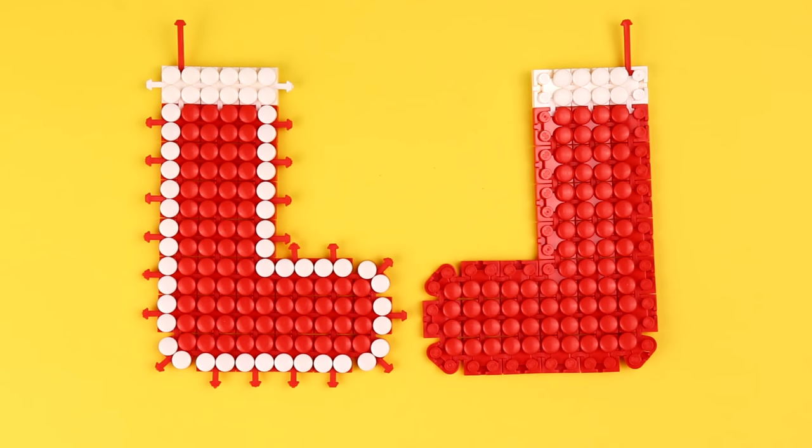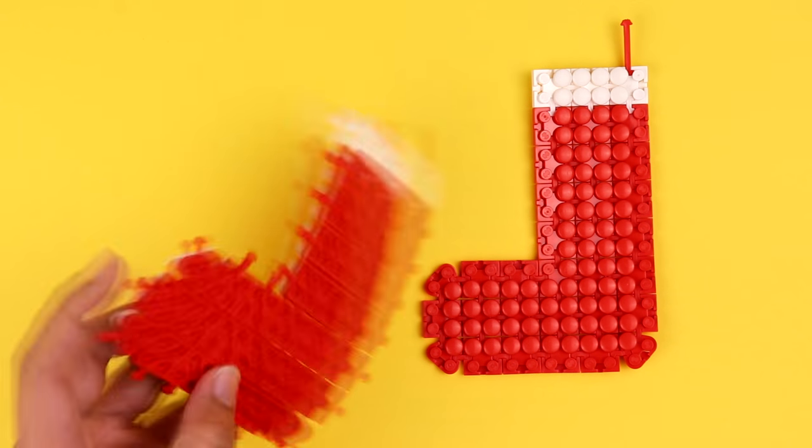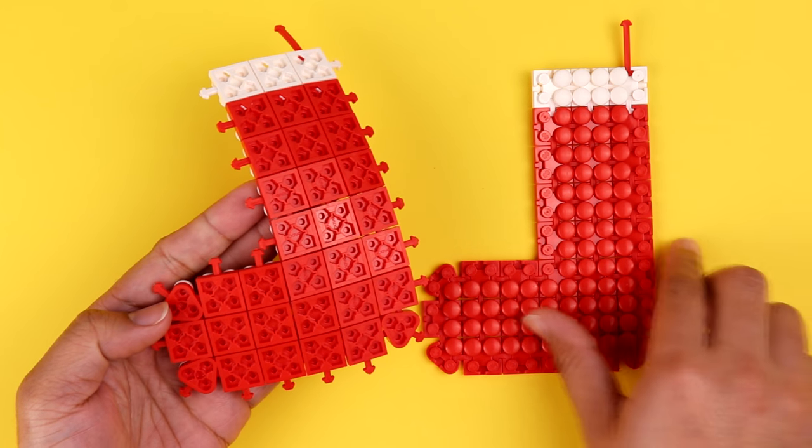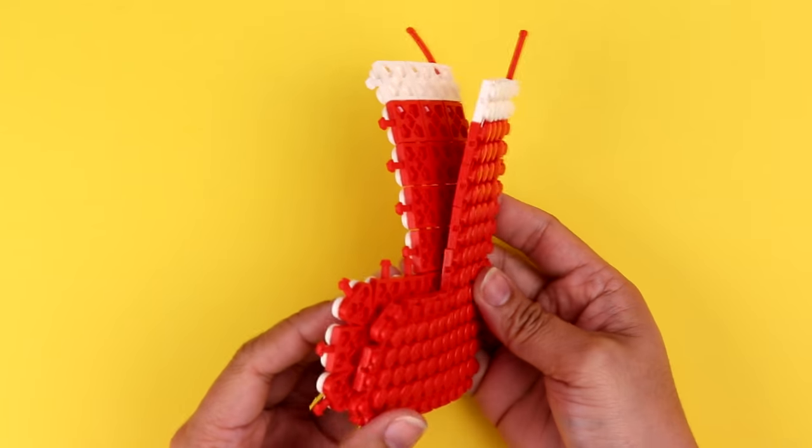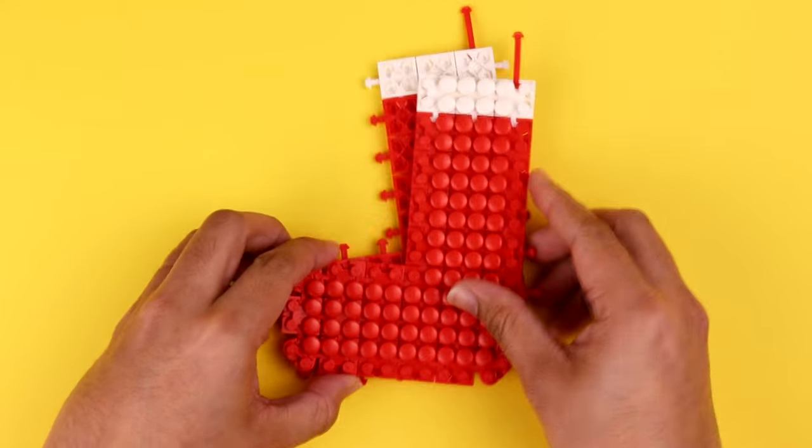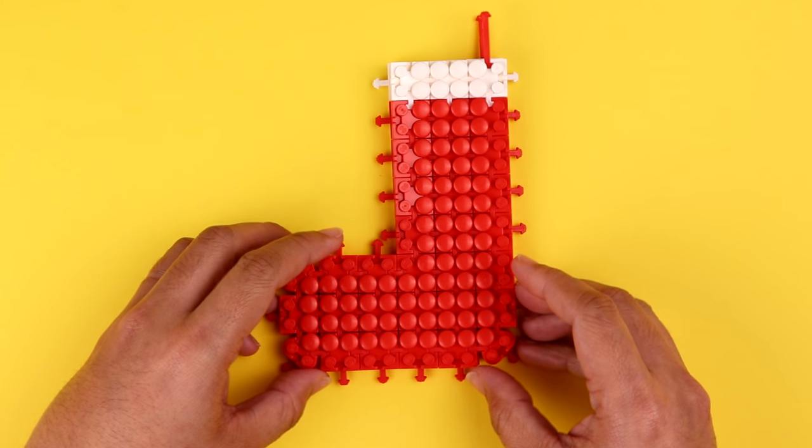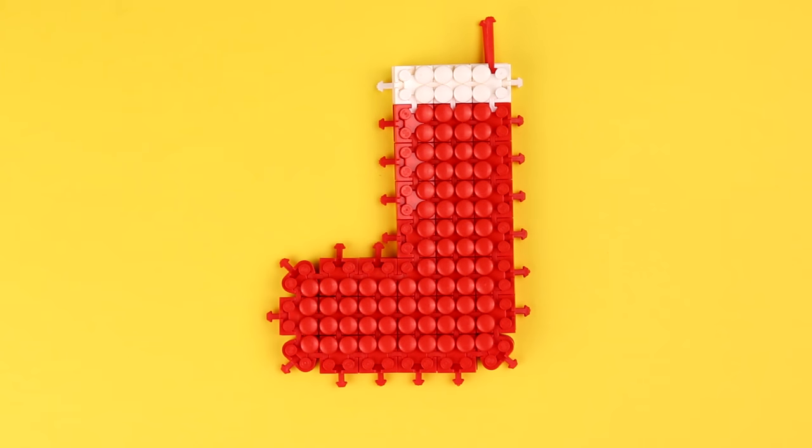So taking your first half and turning it upside down, you can lay them back to back. Now we're using our Flexo 180 degree bend technique.